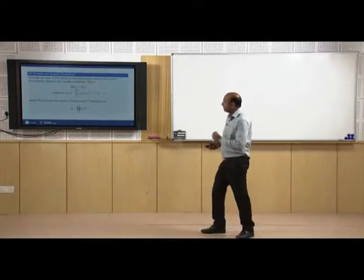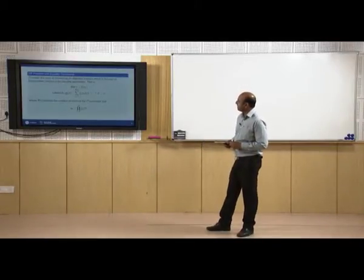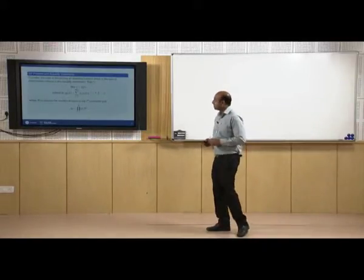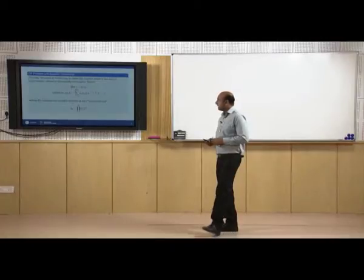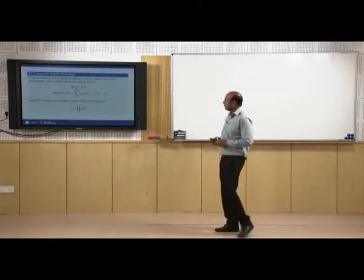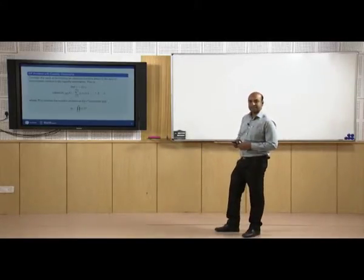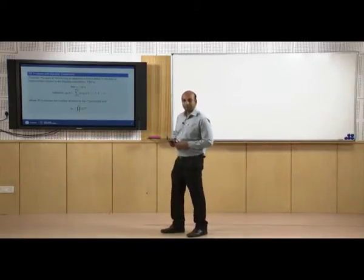So what is the formulation? We have a geometric programming problem with equality constraints. Consider the case of minimizing an objective function which is the sum of posynomials, subject to equality constraints: minimization of f(x) subject to g_i(x) = summation r from 1 to p_i of c_{ir} * u_{ir}(x), where p_i denotes the number of terms in the i-th constraint and u_{ir} is the posynomial term.